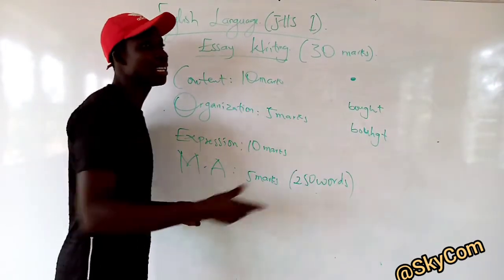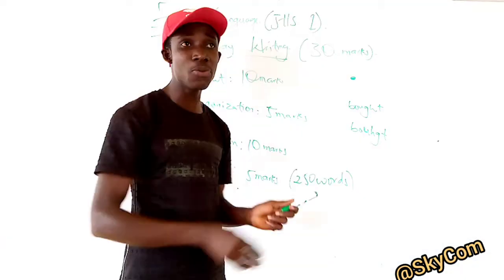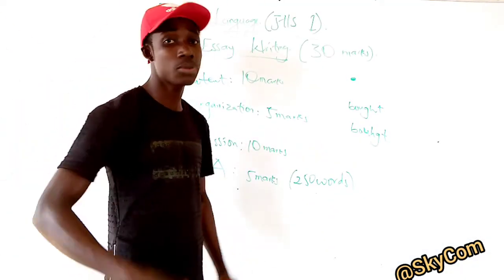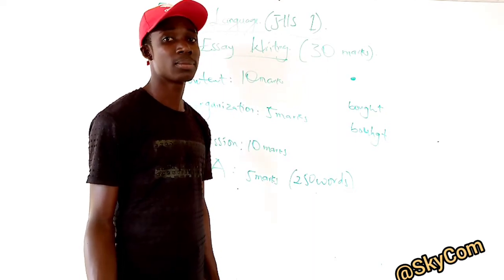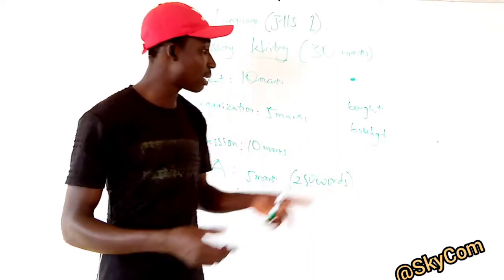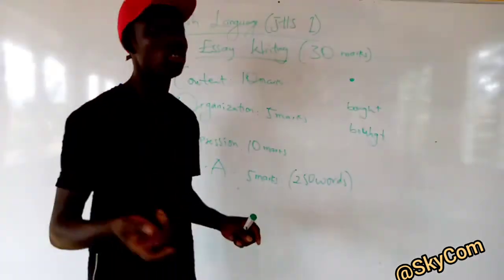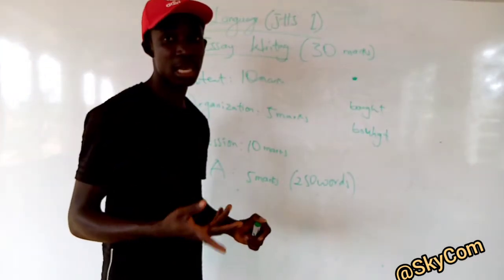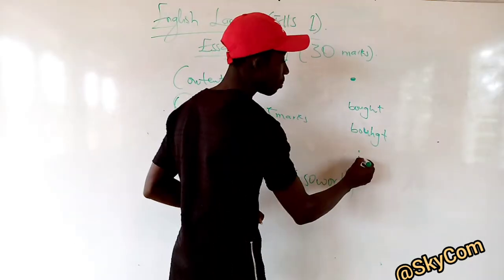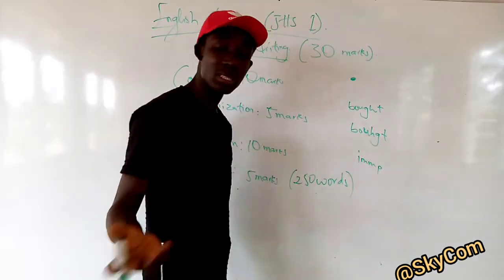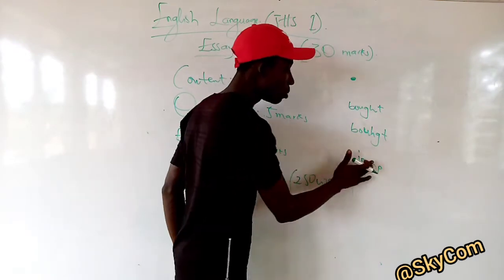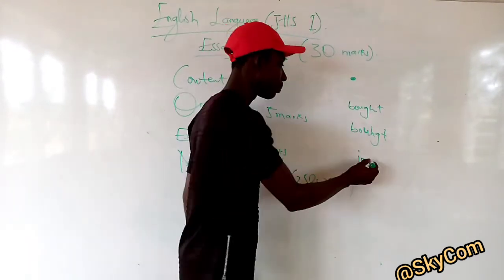Sometimes a word like 'grandfather' is supposed to be written together, but you write it as two words — that's wrong. There are also omissions. Sometimes you're supposed to double a letter — like in the word 'important,' you might mistakenly write double M. If you're supposed to have just one M and you double it, it's wrong.